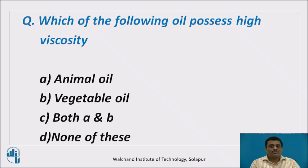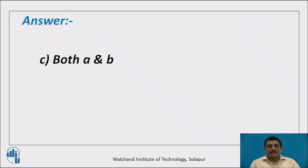Now, a question: which of the following oils possesses high viscosity? The options are: animal oil, vegetable oil, both A and B, or none of these. The correct answer is option C — both A and B, that is, animal oil and vegetable oil. Animal oil and vegetable oils are good in viscosity, whereas mineral oils are poor in viscosity.